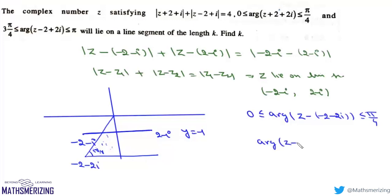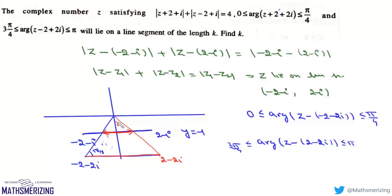The next condition is: argument of (z - (2-2i)) lies between π and 3π/4. The complex number z common to all three regions forms a line segment. This segment has length where one unit corresponds to 45 degrees — both components are 1 — so the line segment has length k = 2.